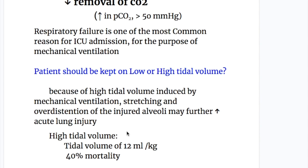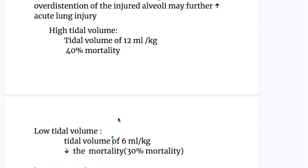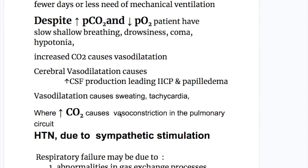In mechanical ventilation, the patient may be kept at a low or high tidal volume. Compared to low tidal volume, high tidal volume is more dangerous, because stretching and over-distention of already injured alveoli may further increase acute lung injury. High tidal volume is 12 milliliters per kg of body weight and has a 40% mortality, whereas low tidal volume is 6 milliliters per kg and has a mortality rate of 30%. If CVP and pulmonary capillary wedge pressures are kept low, there is less need for mechanical ventilation.